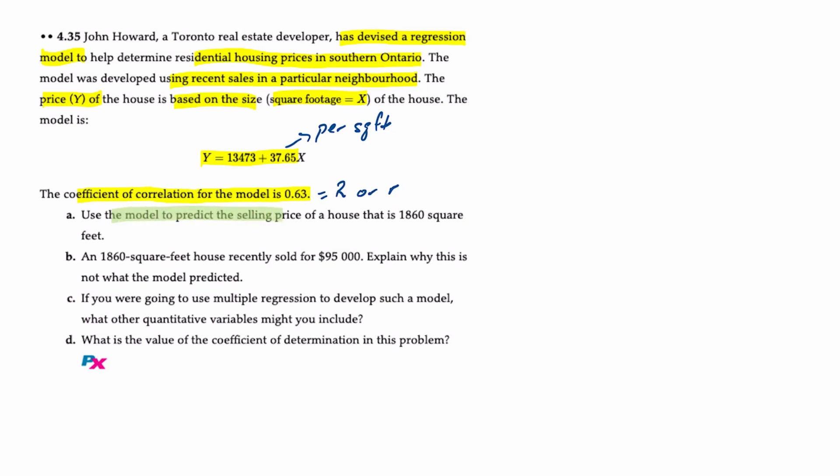We have four requirements for this question. The first is to use the model to predict the selling price of a house that's 1,860 square feet. Well, to do that all we do is substitute into the equation, so Y equals 13,473 plus 37.65 times 1,860 square feet, and that should result in a house price of $83,502.